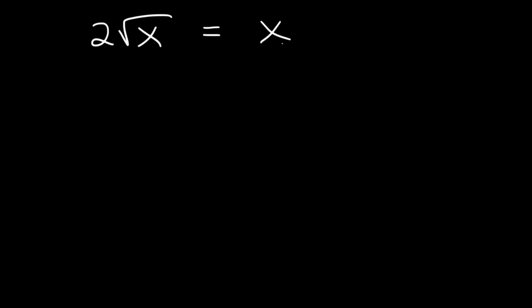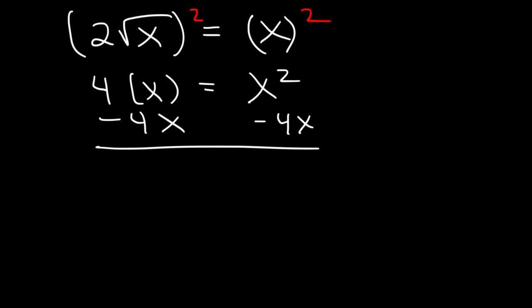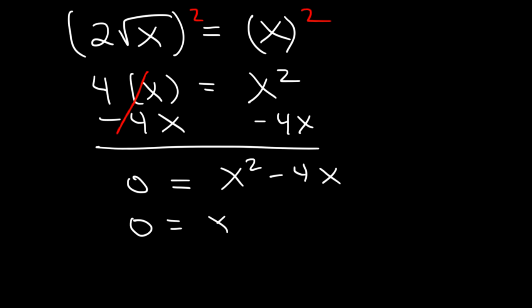What about this one: 2 times the square root of x is equal to x. In this example, we can square both sides. The 2 is multiplied to root x, so we don't have to FOIL anything. 2 squared is 4, and the square of a square root cancels the square root, so it's just going to be 4x. On the right side we have x squared. Now subtract 4x from both sides. On the left they cancel, giving 0; on the right, x squared minus 4x. We can factor that — take out the GCF, which is x — so x equals 0 and x equals 4.